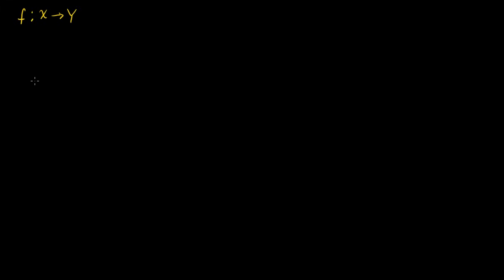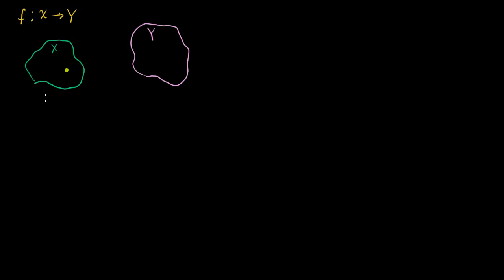Let's say we have some function f, and it's a mapping from the set X to Y. So if I were to draw the set X right there, and then the set Y just like that, a function just associates any member of our set X. So I have some member of my set X there, and if I apply the function to it — or if we're dealing with vectors, we could use the word transformation, but it's the same thing — we would associate this member of X with a member of Y. That's why we call it a mapping.